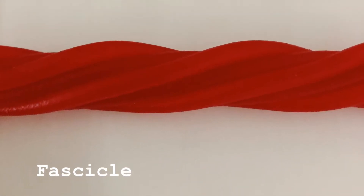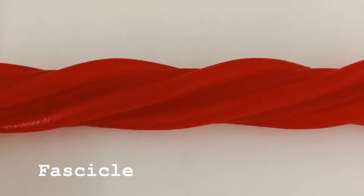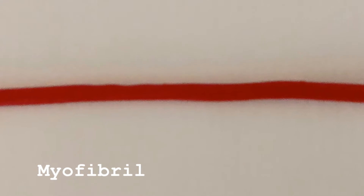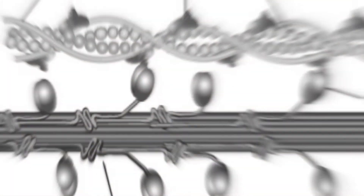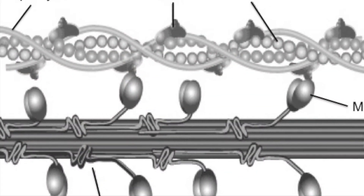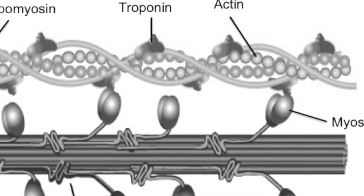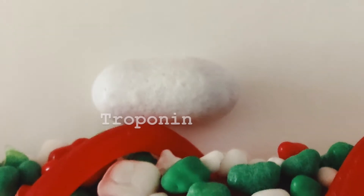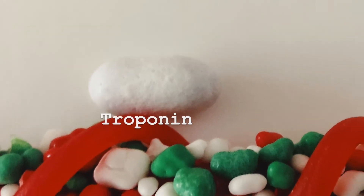First of all, the components: skeletal muscles are made up of fascicles, bundles of skeletal muscle fibers. Myofibrils are composed of protein subunits called myofilaments. Myofilaments are made up of thin and thick bands called actin and myosin.